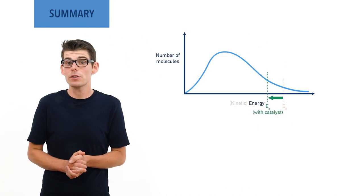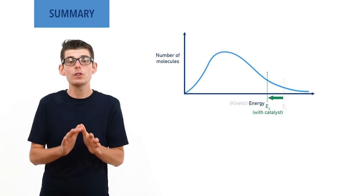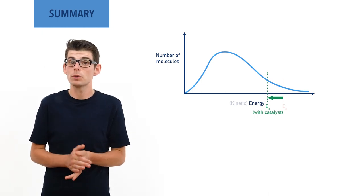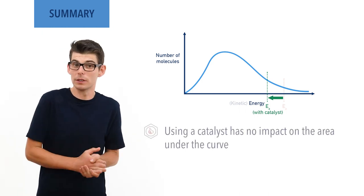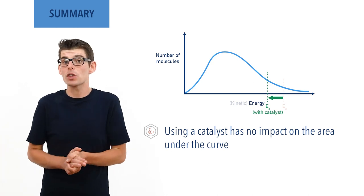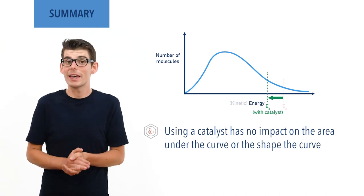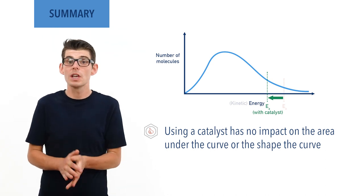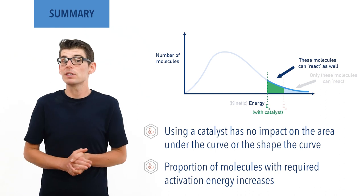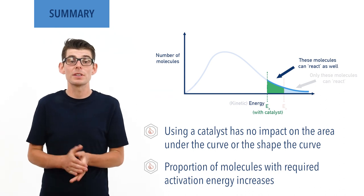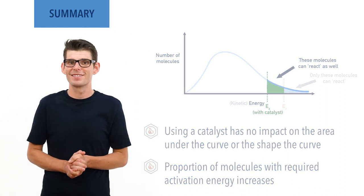Decreasing the activation energy for a reaction by using a catalyst has no impact on the number of molecules in the system, the area under the curve, or the average kinetic energy of the molecules — the shape of the curve. It does, however, increase the proportion of molecules that have the required activation energy, increasing the frequency of successful collisions and the rate of the reaction. I hope you found this video useful. Please check out other relevant videos in the links given in the description below and visit chemistrystudent.com for free notes and revision materials.